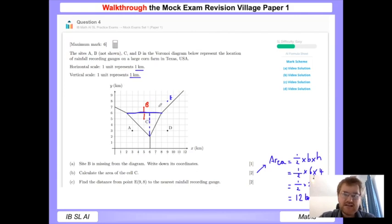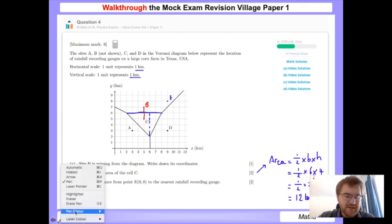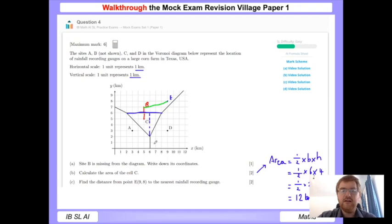So 9 along and 8 upwards, this is our point E, and we need to find the distance from there to the nearest rainfall recording gauge. In a Voronoi diagram, these cells represent the area in which that particular site is closest to it. In this particular cell here, B is going to be our closest rainfall gauge.